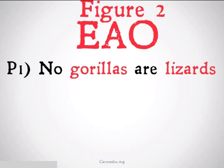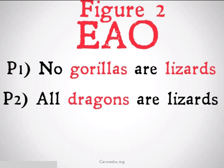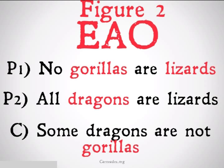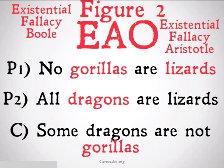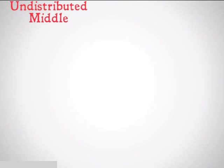Figure two, EAO: No gorillas are lizards. All dragons are lizards. Therefore, some dragons are not gorillas. This commits the existential fallacy for Boole because O is particular and E and A are universal. However, it also commits the existential fallacy for Aristotle, because dragons is the critical term — it's not the middle term, so it doesn't need to be distributed, and it's not distributed in the conclusion. It's superfluously distributed, and dragons don't exist, so it commits the existential fallacy for Aristotle as well.